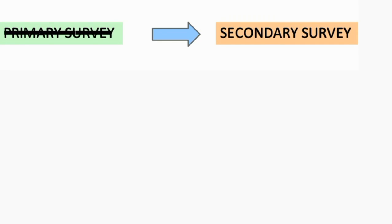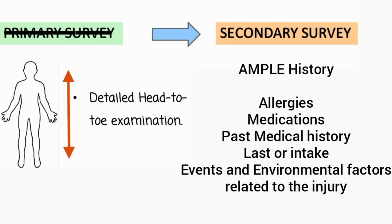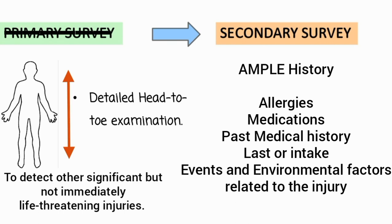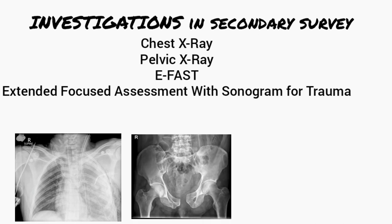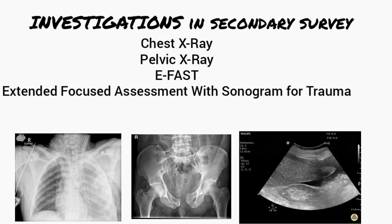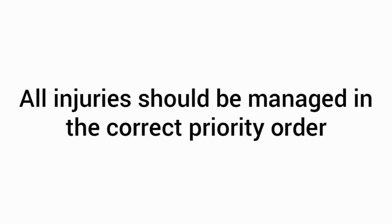After the primary survey, the secondary survey begins, in which you obtain an AMPLE history — a mnemonic for Allergies, Medications, Past medical history, Last oral intake, and Events and environmental factors related to the injury. Then a focused head-to-toe physical exam is conducted to detect other significant but not immediately life-threatening injuries. Major trauma patients often require a chest x-ray, pelvis x-ray, and an ultrasound of the abdomen called E-FAST — extended focused assessment with sonogram for trauma — to identify blood loss from the most common sources. All identified injuries should then be managed in the correct priority order.